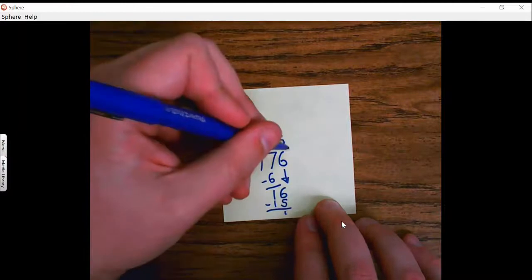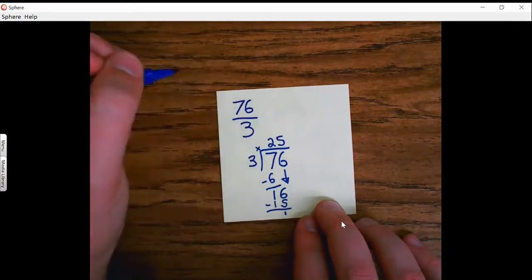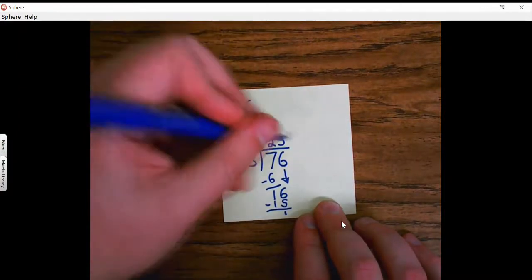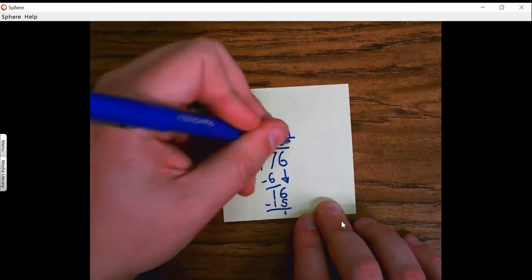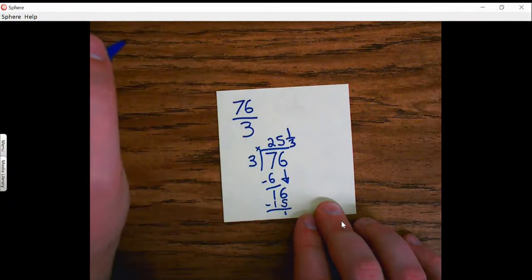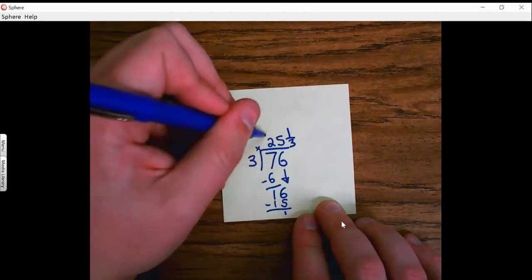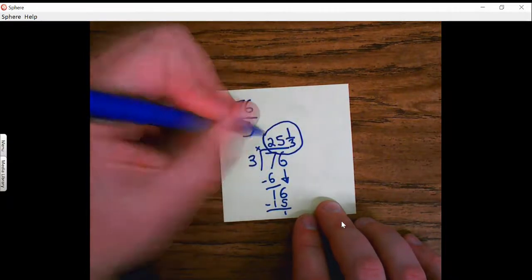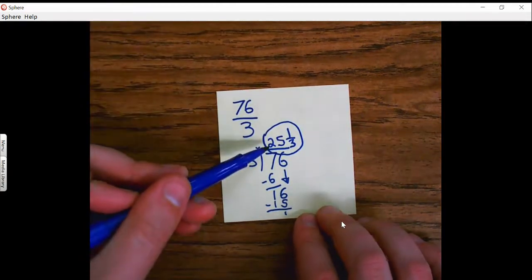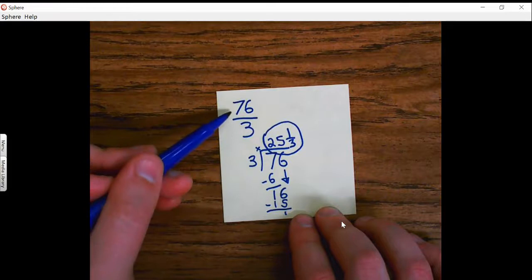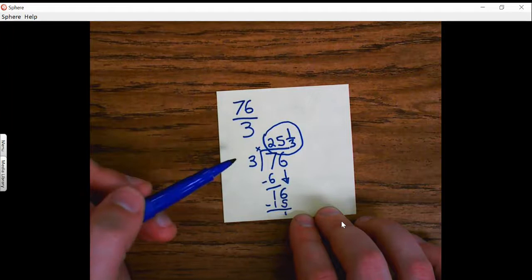And remember, instead of writing R1 as remainder 1, I'm going to take and put that 1 as the numerator, and my denominator stays the same. So my mixed number, 25 and 1 third. Now we can have a big whole number like that because we had such a big numerator. So that's a lot of groups of 3 that I'm able to pull out.